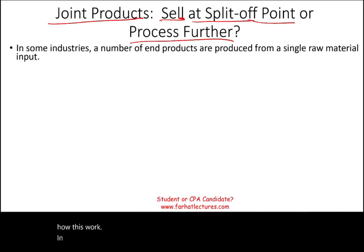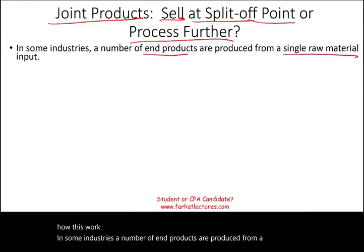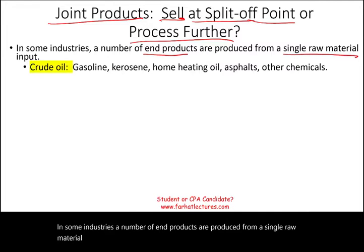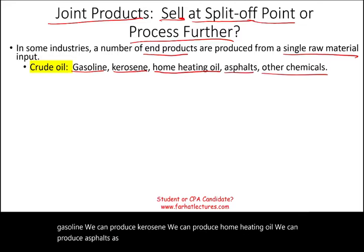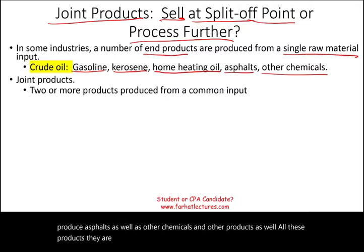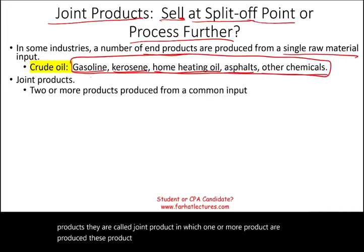In some industries, a number of end products are produced from a single raw material. A classic example is crude oil. From crude oil we can produce gasoline, kerosene, home heating oil, asphalt, as well as other chemicals and other products. All these products are called joint products, in which one or more products are produced from one single input — crude oil.